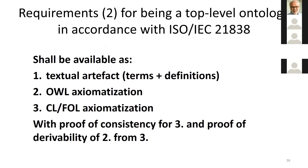The second requirement has to do with how the ontology is presented. In order to be a top level ontology in accordance with the standard, you have to have textual definitions understandable by a human being, an OWL axiomatization — an equivalent set of definitions expressed in OWL, as equivalent as you can manage — and an axiomatization in Common Logic, which means first-order logic plus the extra pieces of equipment which Common Logic provides. We also require a proof of consistency for the Common Logic axiomatization and a proof of derivability of the OWL axiomatization from the Common Logic.